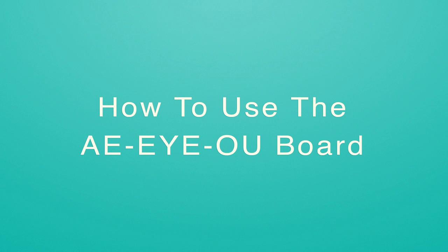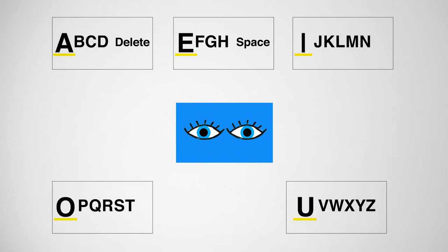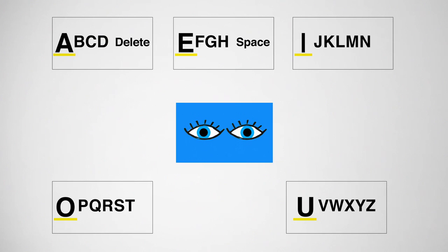Let's spell the word 'dog' as an example. First, the user gazes at the section containing the letter D. The communication partner watches the user's eyes and starts to read the letters A, B, C, D. The user blinks when D is read to indicate that D is the desired letter. Next, the user gazes at the section containing the letter O. The communication partner reads the letter O, and the user blinks to indicate that O is the desired letter.